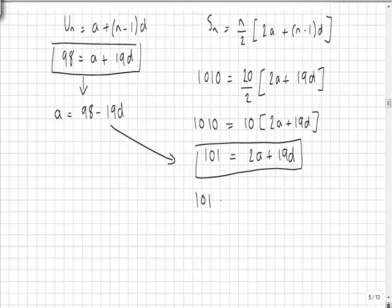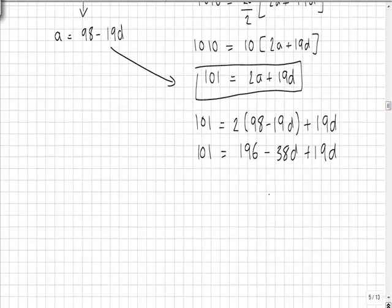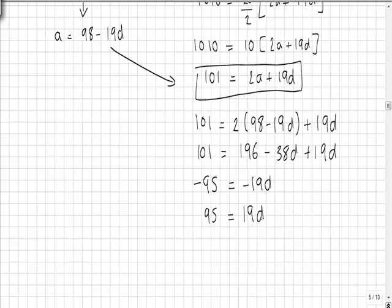This gives us 101 is equal to 2 lots of 98 minus 19d plus 19d. Expanding, we get 196 minus 38d plus 19d. Take 196 off both sides, gives us minus 95 is equal to minus 19d, meaning that d is in fact equal to 5.